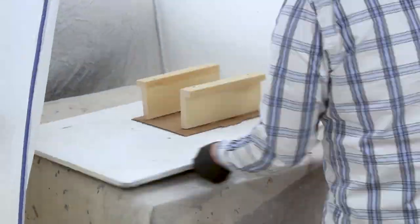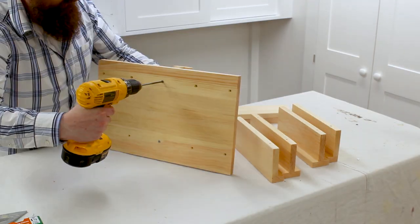I sprayed 3 coats of shellac on the hanger parts and the shelf. When the shellac was dry, I reattached the hangers.